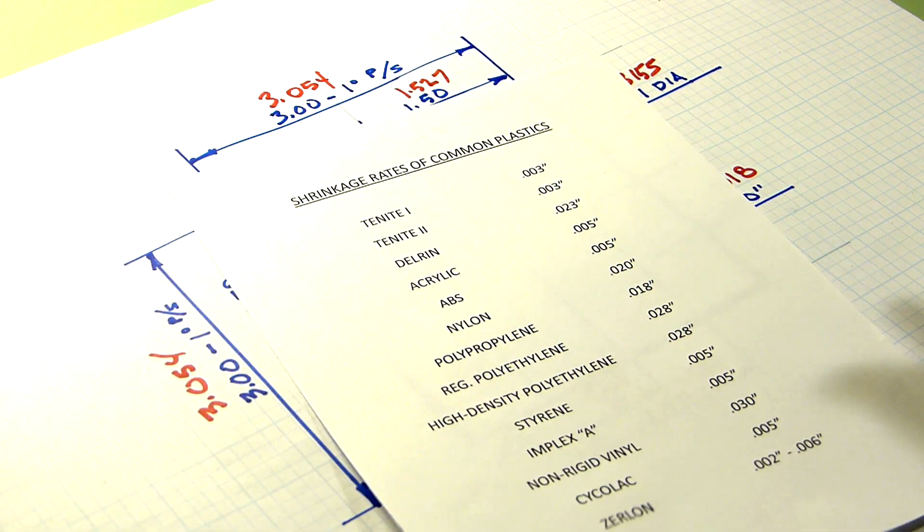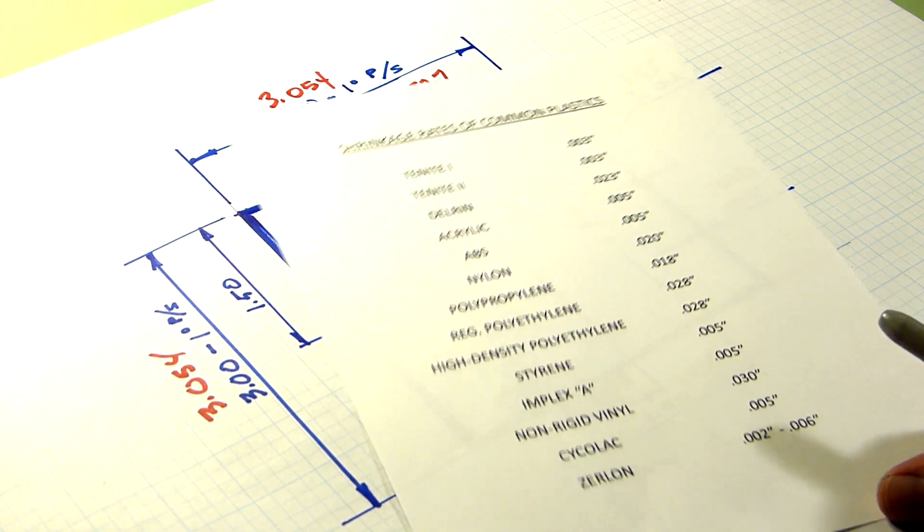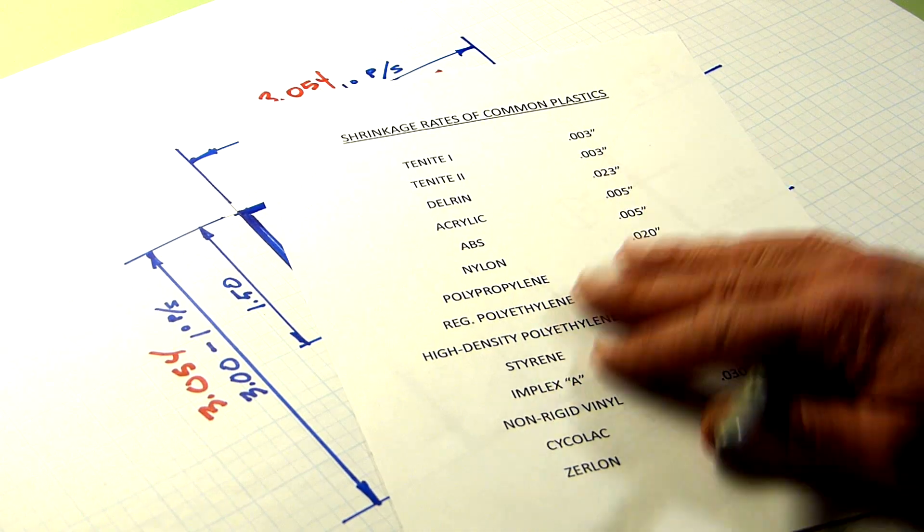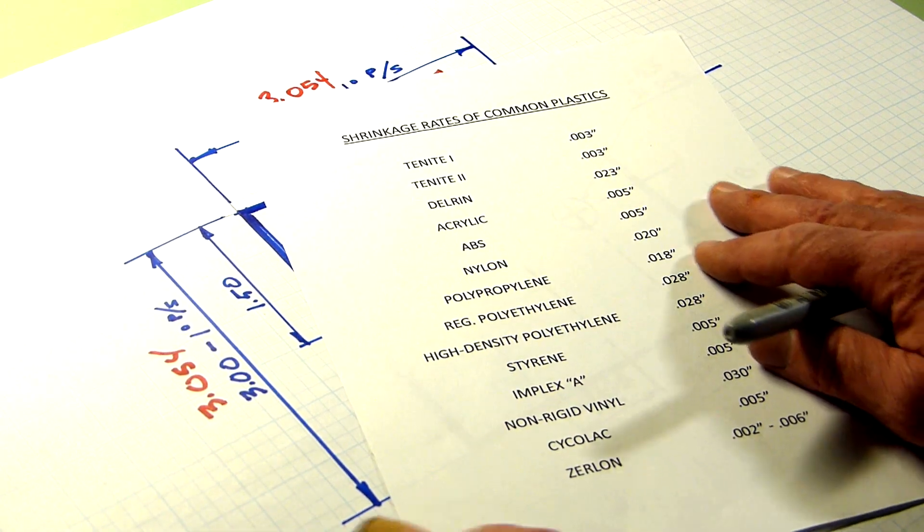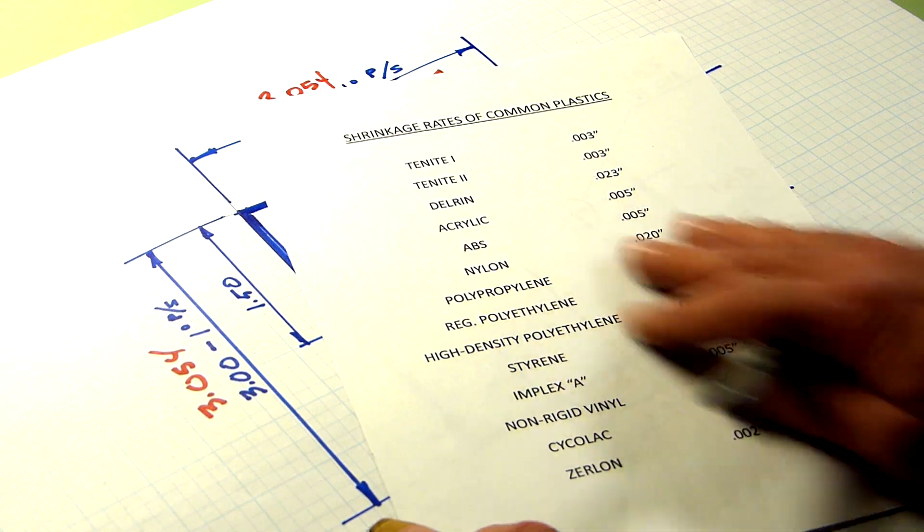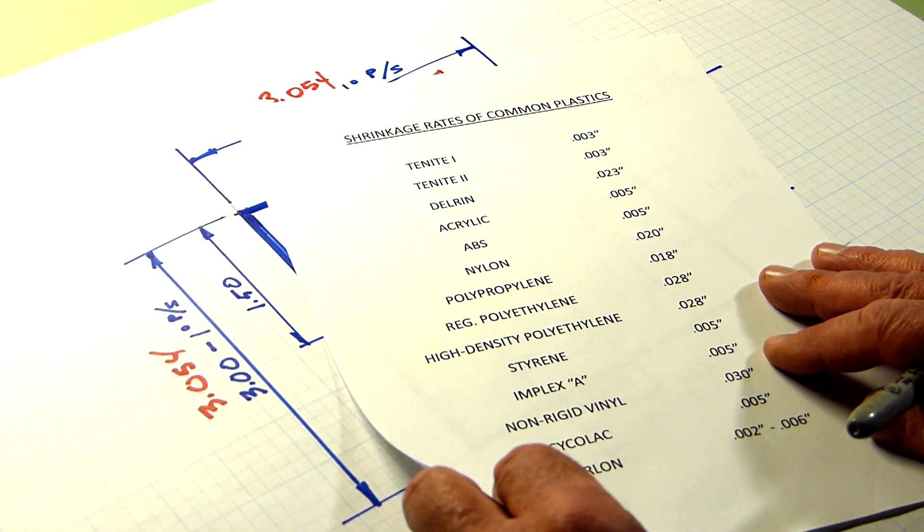And it looks like now online they're doing these by percentages. Not sure how that works because I'm not designing molds anymore. But if you were to call the company, if you were designing a mold, they'll give you a shrink rate for the material you're going to be using.